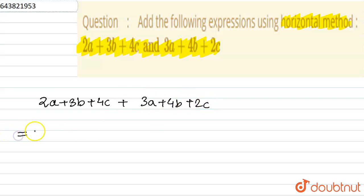So let us arrange the like terms first. So we have 2a and plus 3a. Then we have plus 3b and plus 4b. Plus 4c and plus 2c.